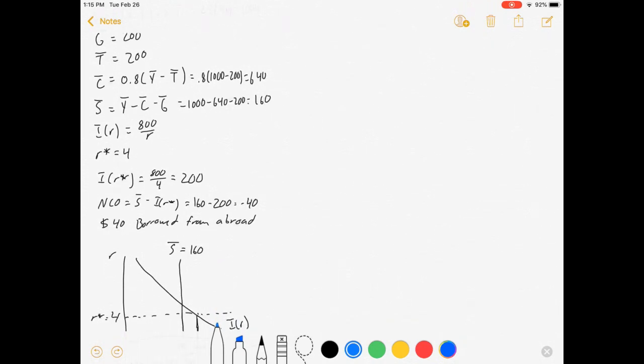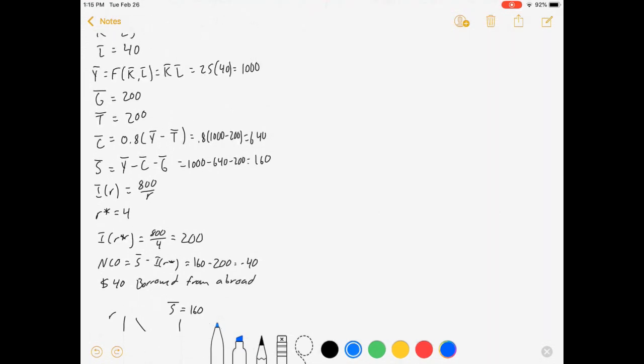Consumption is 0.8 times disposable income, that's Y minus taxes. That's $1,000 minus $200 times 0.8, which is $640. Savings is Y minus C minus G. Y is $1,000, C is $640, and G is $200, so savings is $160.